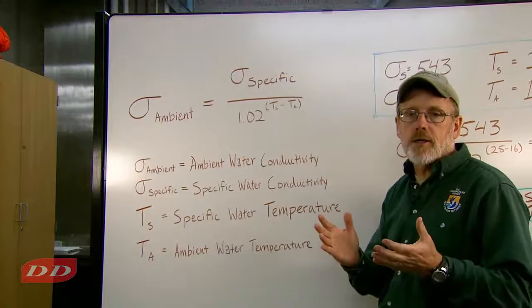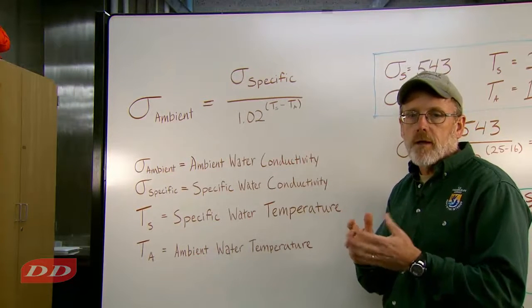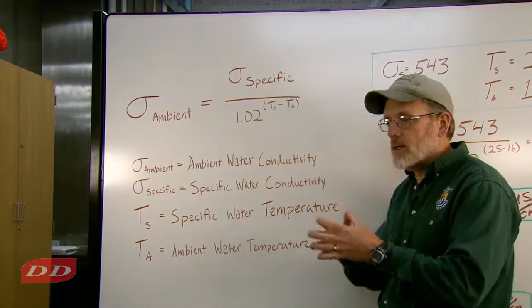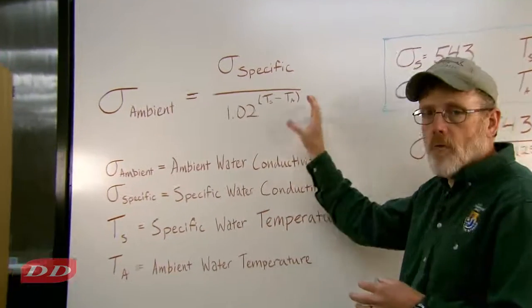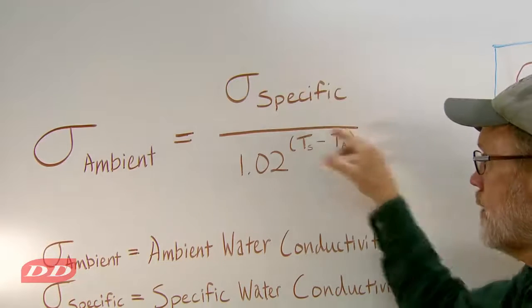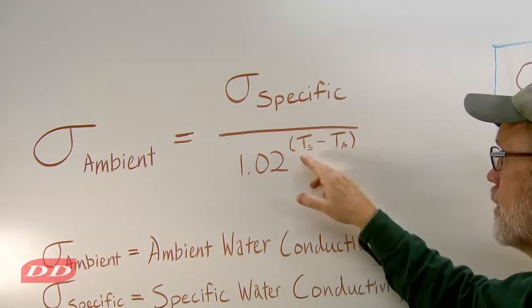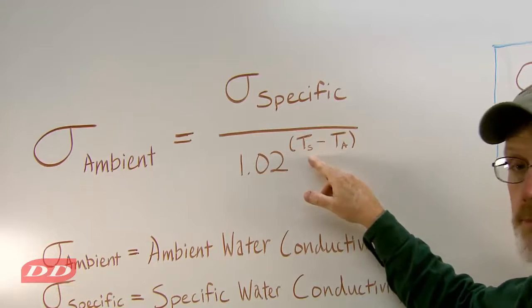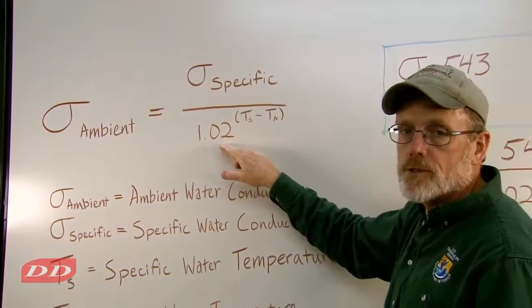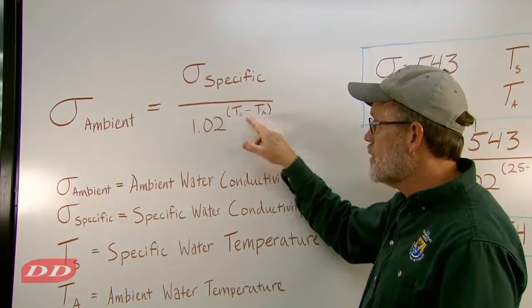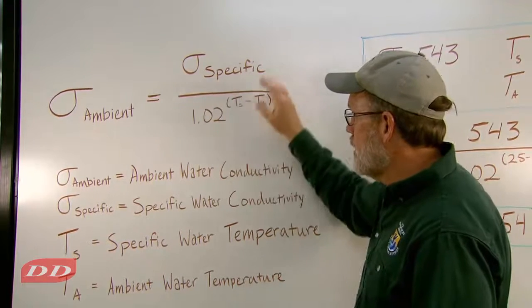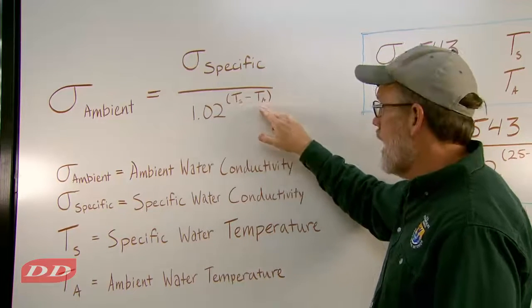Some meters only measure specific conductivity, or you might have historical data that only includes specific conductivity. Since we want ambient conductivity — because that's the actual conductivity of the water important for electrofishing — we have a formula to convert from specific to ambient. The formula is: ambient conductivity equals specific conductivity divided by 1.02 raised to the power of the difference between the specific temperature of the meter (often 25 degrees) and the actual water temperature. The 2 represents 2% — for every degree the water temperature differs from the specific temperature, conductivity changes by 2%.